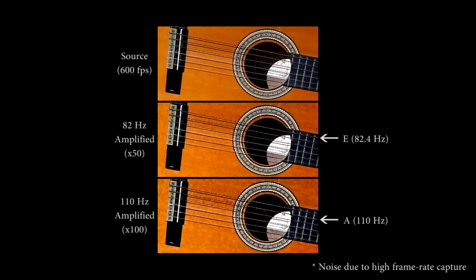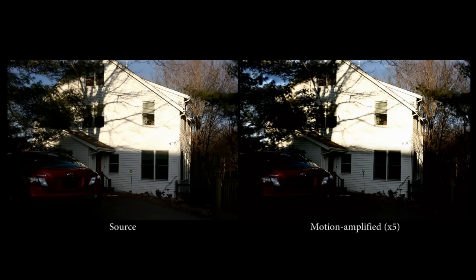In this video, we selectively amplify motions of individual strings of the guitar by tuning the temporal filter to the correct frequency of each string. This input video is a blend between two still images taken 15 seconds apart. The output video reveals changes in the scene, even within this short time period.